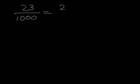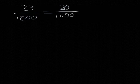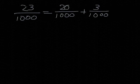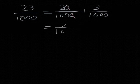This is equal to 20 over 1,000 plus 3 over 1,000. Again, we can now simplify that fraction, 20 over 1,000. In this case, we can divide top and bottom of the fraction by 10 and that will give us 2 over 100.